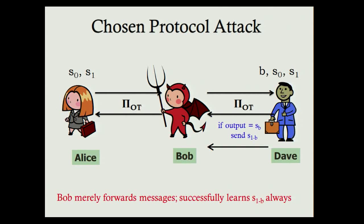We change the protocol on the right slightly. Dave, once the protocol completes, checks whether the output he received equals S_B — we give him S0 and S1 — and if this condition is true, he sends S_{1-B} back. So Bob learns S_{1-B} when run concurrently, which renders pi_OT insecure in this setting.